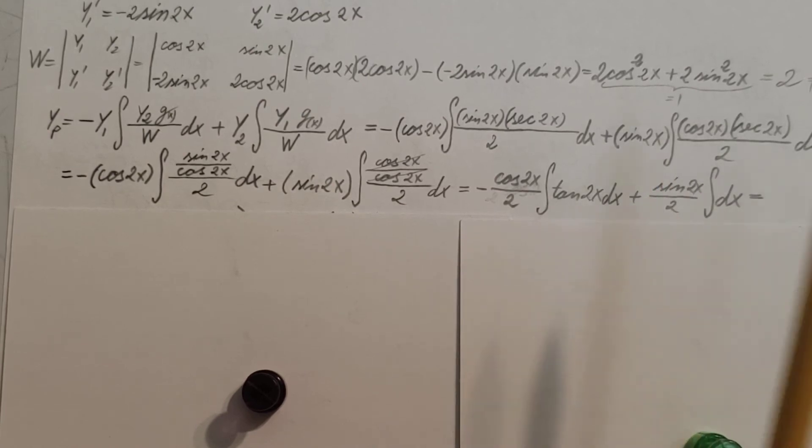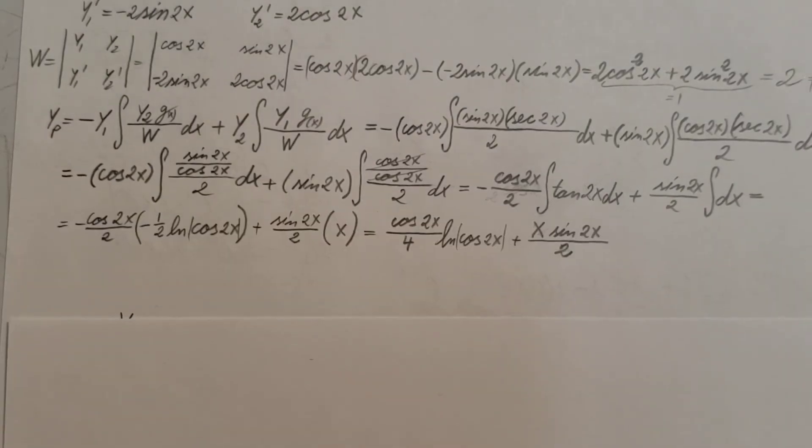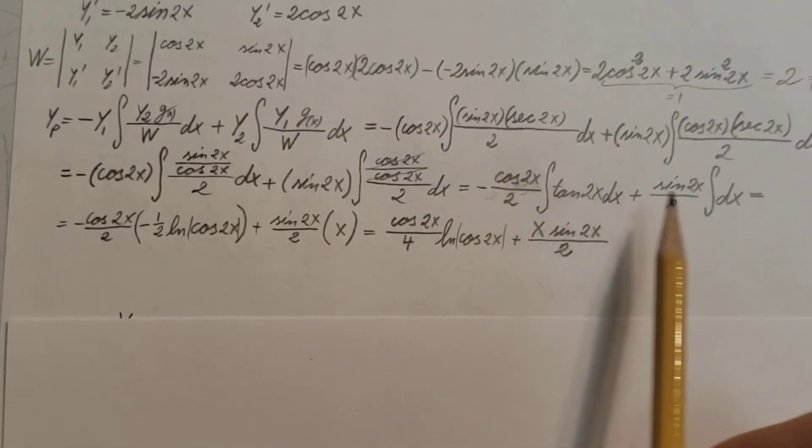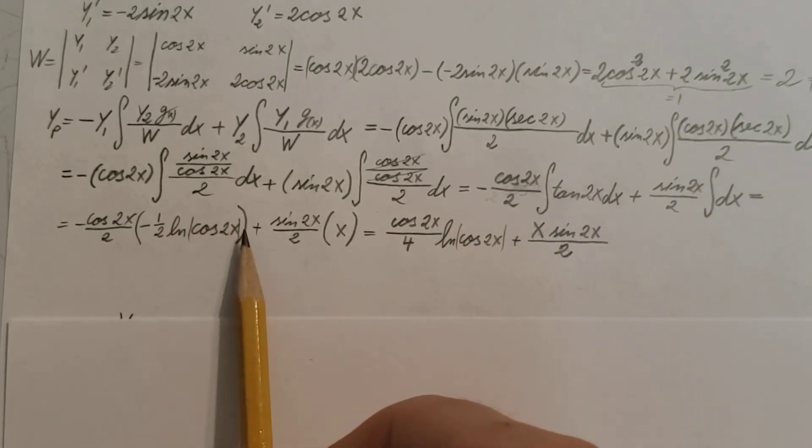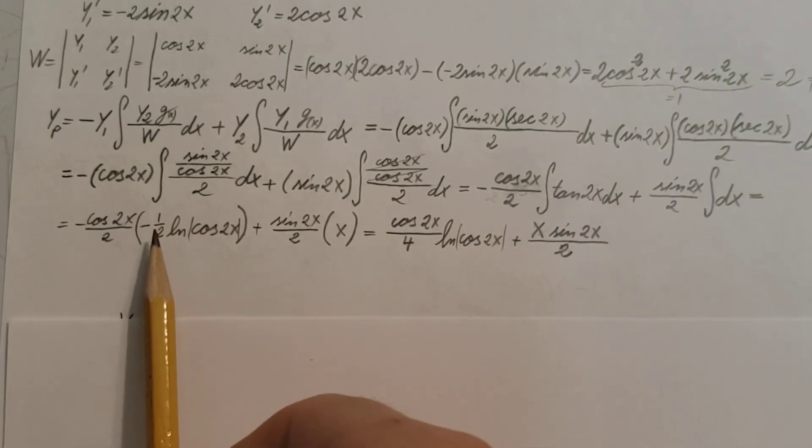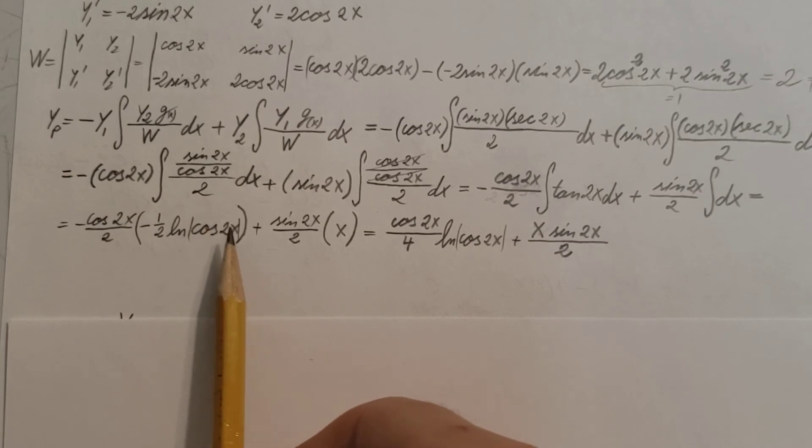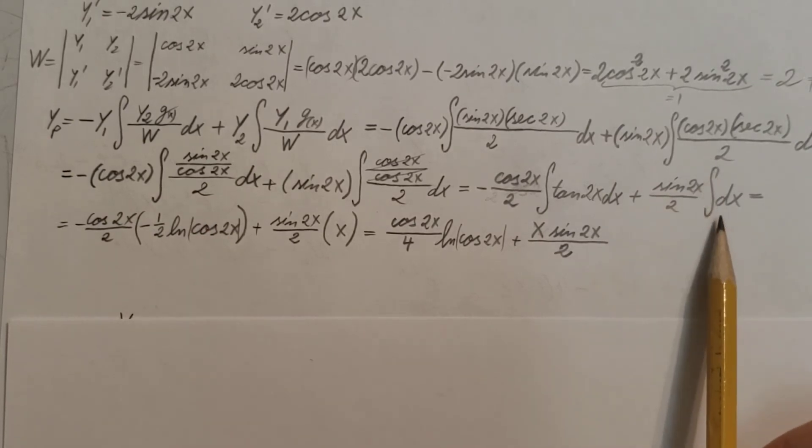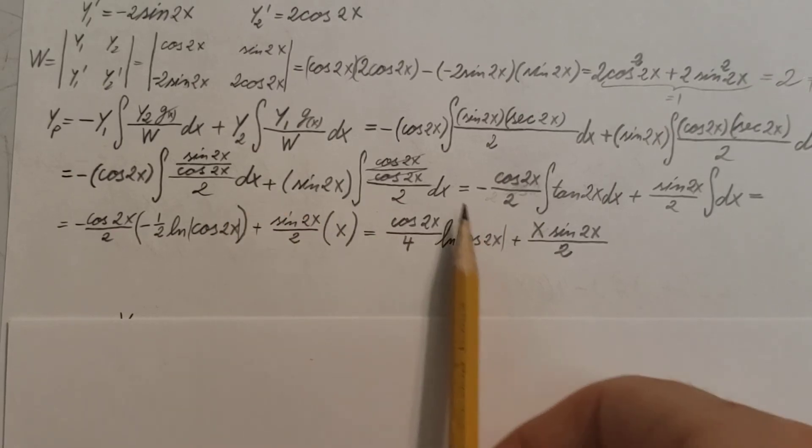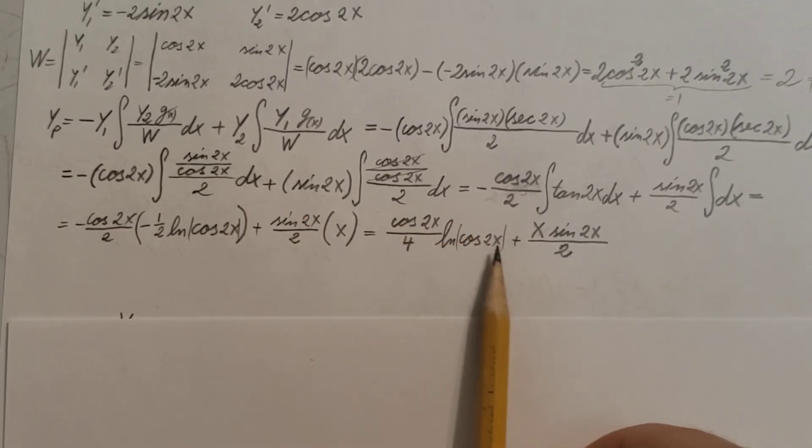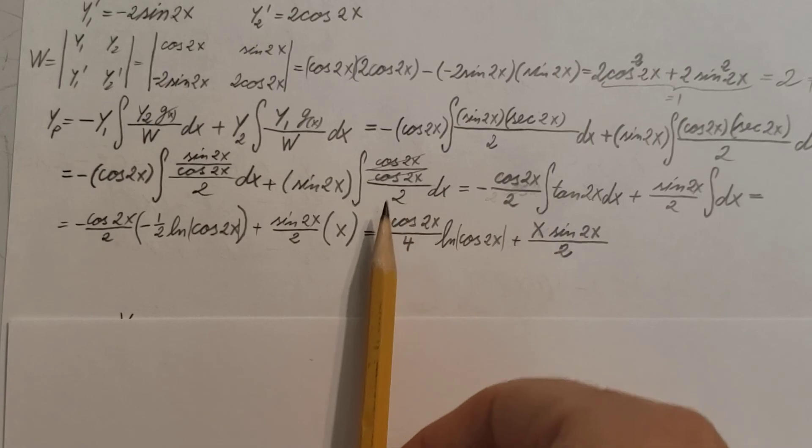Now we perform these two integrals. Integral of tan(2x) is right here: -1/2 ln(cos(2x)). And integral of 1 dx is basically just an x. There you go. Plug them in, write them out a little bit more nicely, and here it is. This right here is our yp.